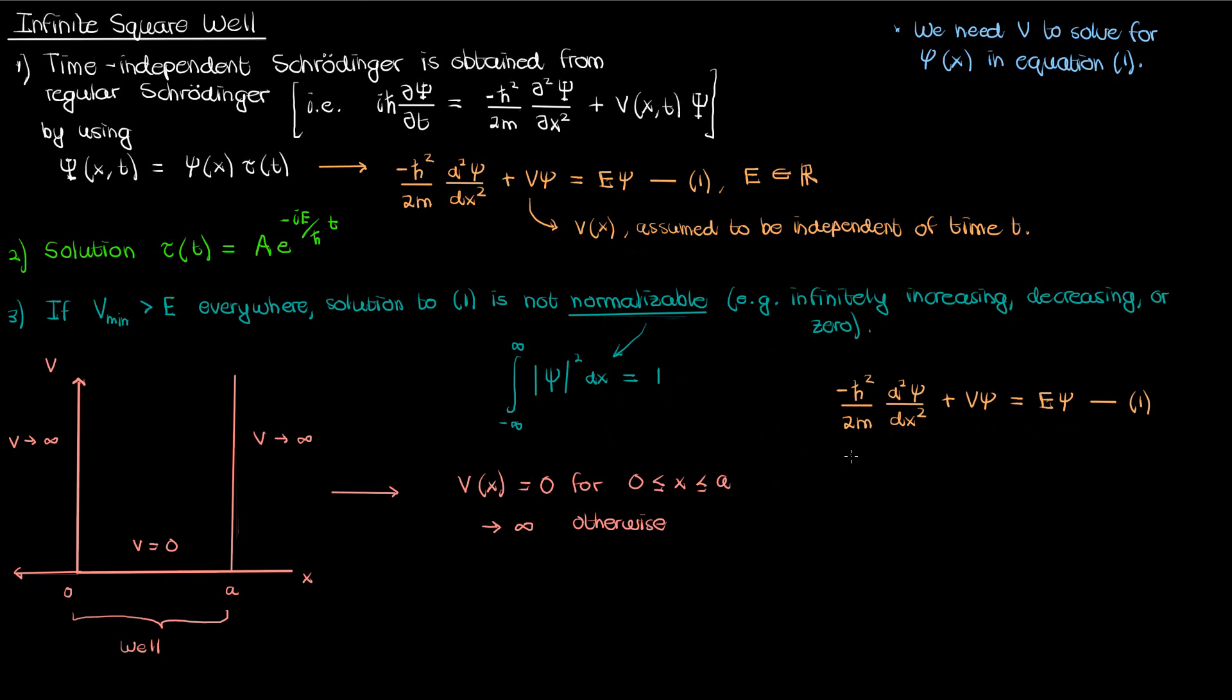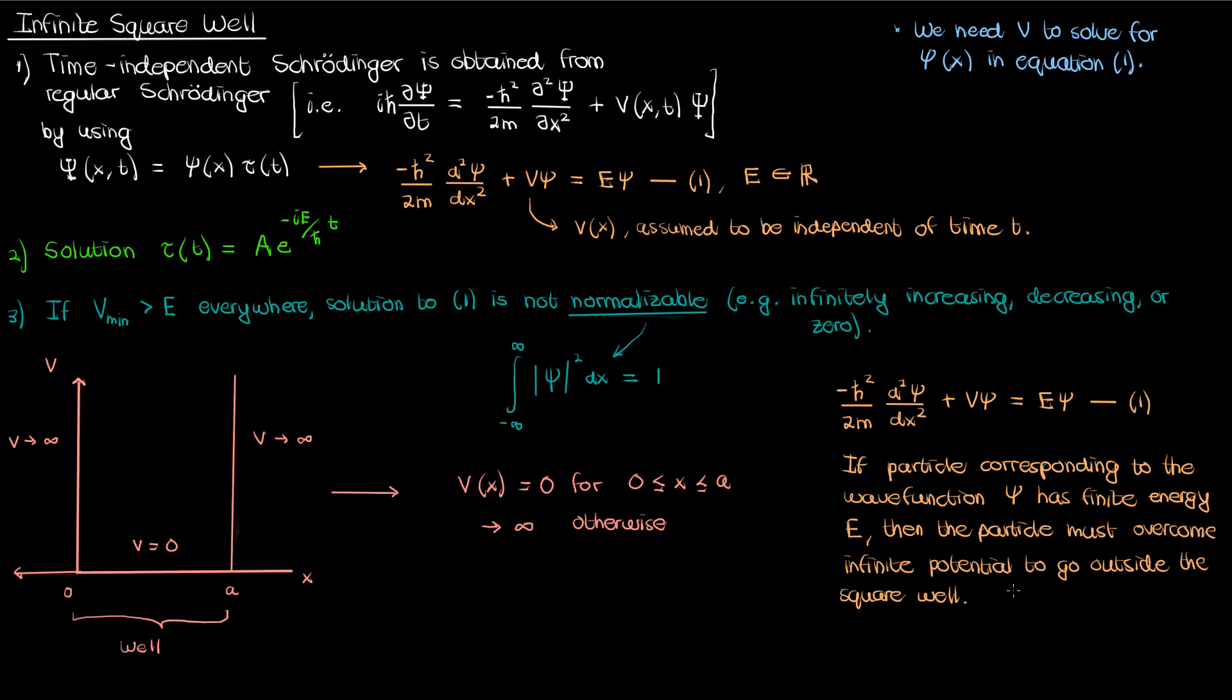Well intuitively we can think of our wave function as representing the behavior of a particle. If that particle has a finite energy E and it is required to overcome an infinite potential to get outside the well, then it's never going to be able to do that because of the finite energy. And since the particle cannot have a presence outside the well, its wave function outside the well is 0.